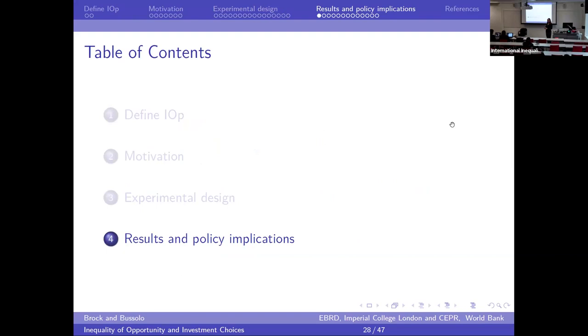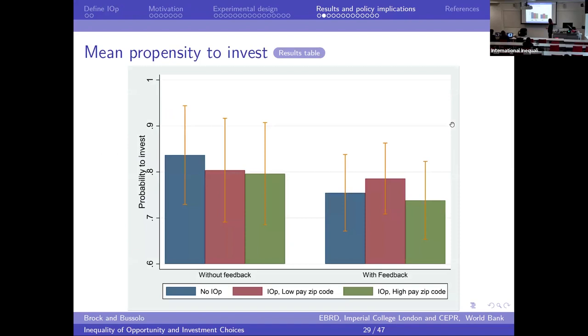The experiment was hosted at the University of Maryland ag econ department. Subjects earned tokens converted to US dollars at 50 tokens to $1. Subjects were students from any department at the University of Maryland, not just ag econ.